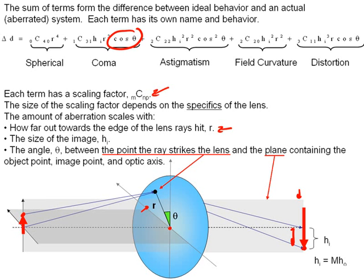So this is a brief introduction to aberrations, which we've expanded by taking a third-order approximation into a five-term equation that has power laws consisting of a scaling factor depending on the lens, r to some power, h_i, the image height to some power, and cosine of the angle theta to some power.